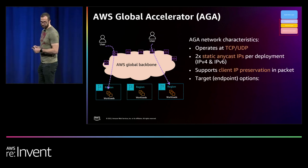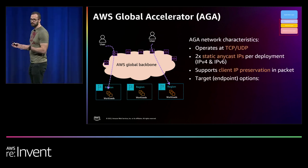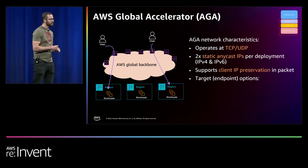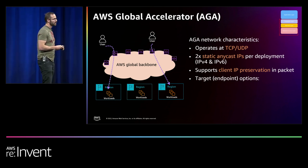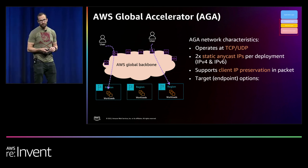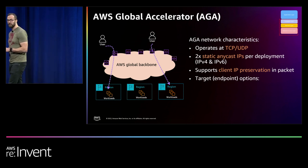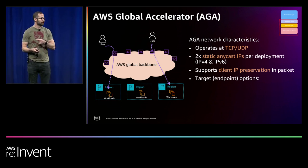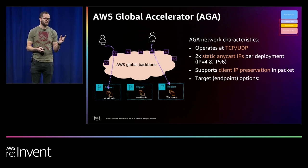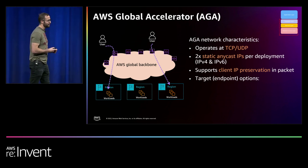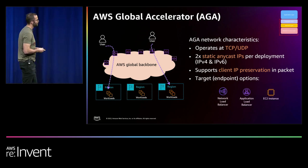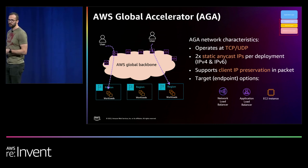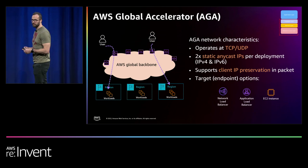Summarizing Global Accelerator: it operates at the transport layer, so it doesn't process anything at the application layer. You get two Anycast IP addresses — one for IPv4 and one for IPv6. It supports client IP preservation, so traffic from clients all the way to the region will preserve that client IP address. Supported targets are Network Load Balancers, Application Load Balancers, and EC2 instances, but they must live inside an AWS region.